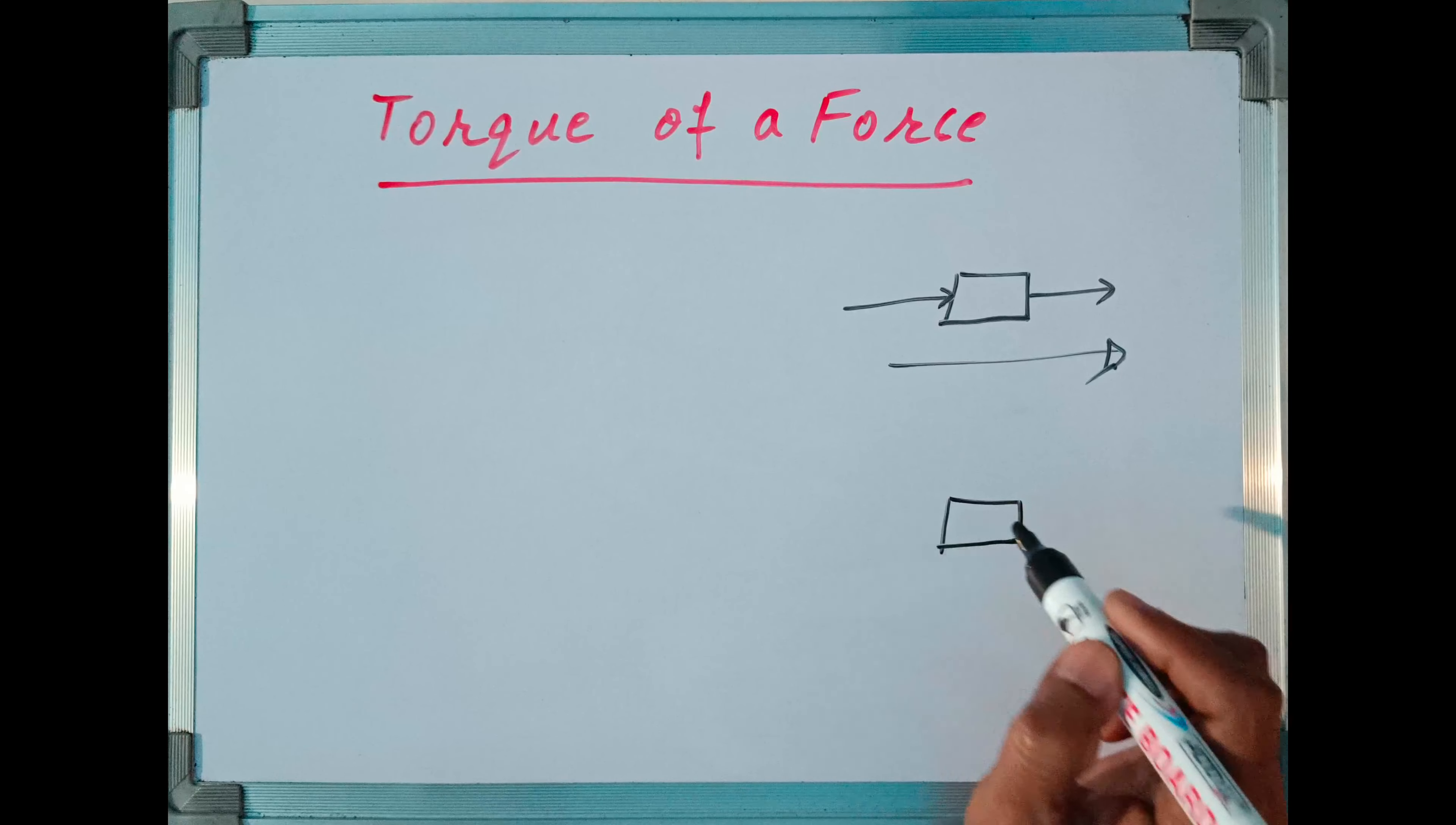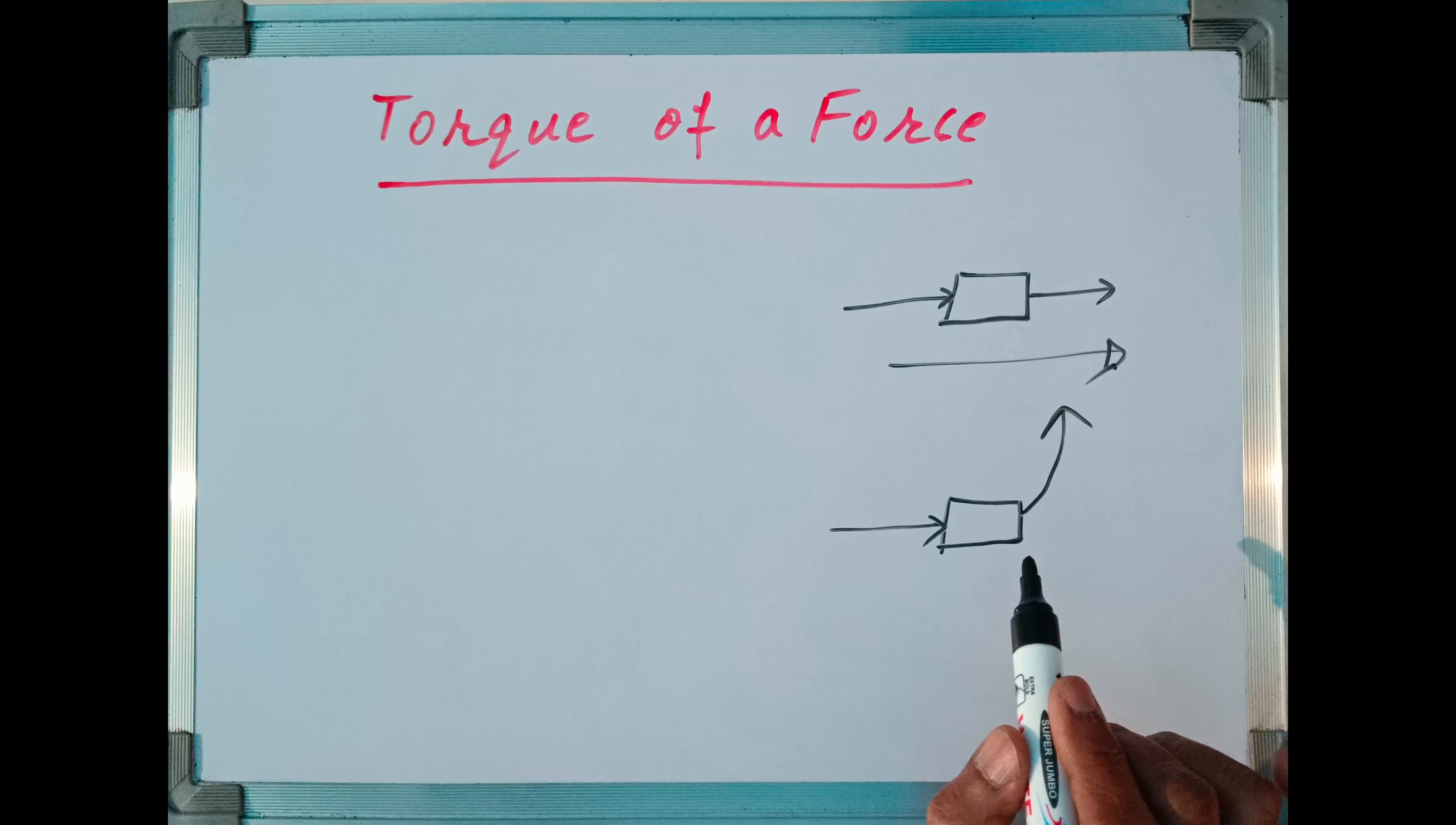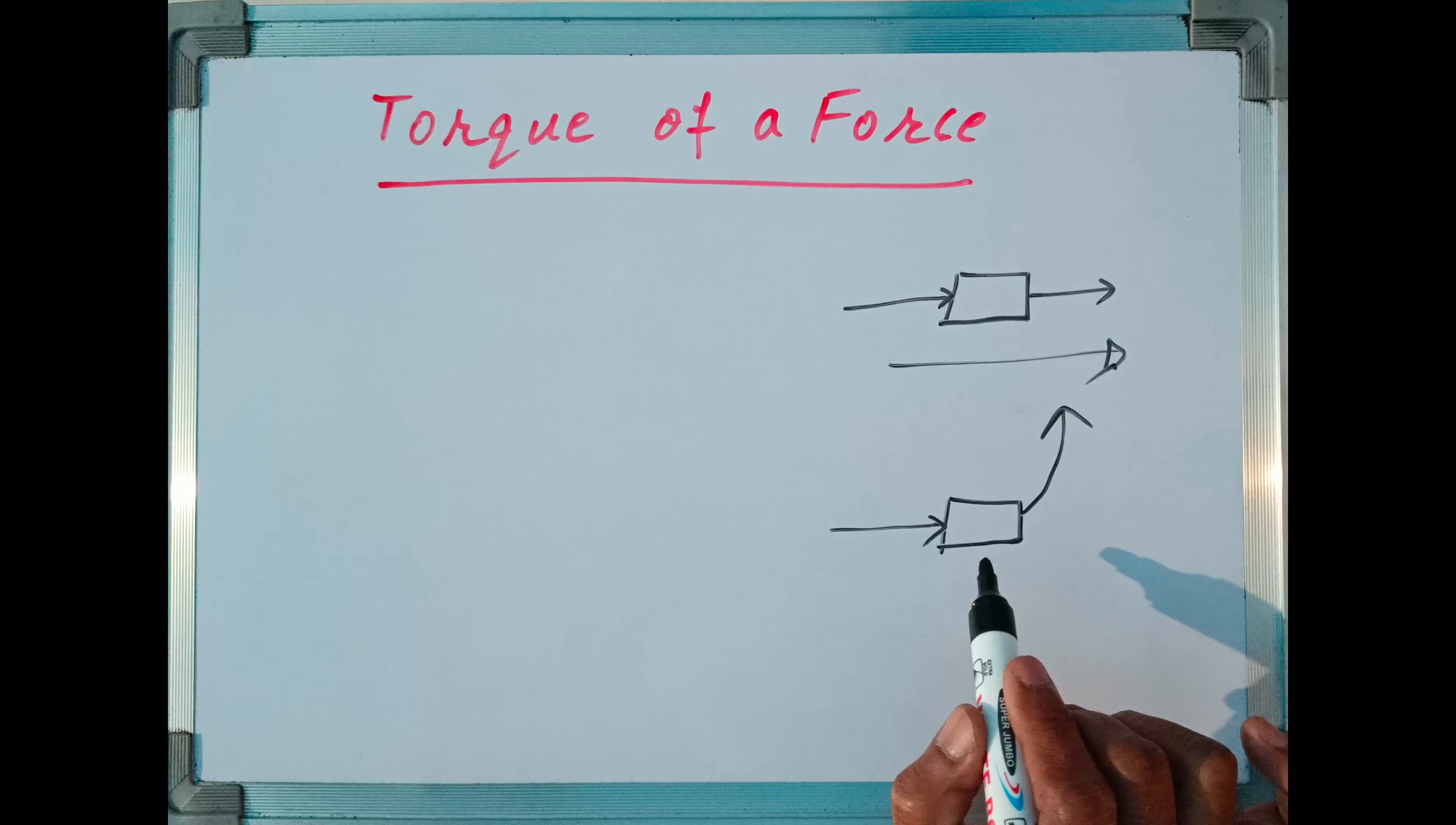Suppose a force is acting on a body in this direction and the body starts moving in a straight line. This is the effect of force - the body moves in a straight line. Sometimes, if we apply a force on the body, the body instead of moving in a straight line starts moving in a circular path. This turning effect of force on a body is called torque of a force.